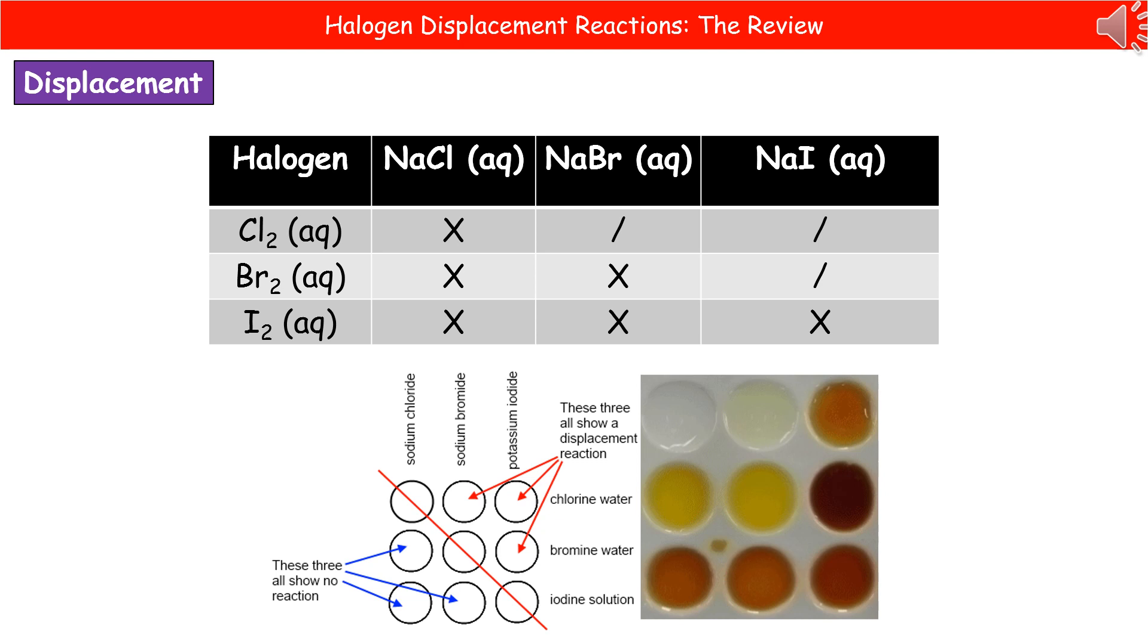What we're looking for in this is some kind of a change in colour that tells us we've seen a displacement reaction. Now, what they could ask you to do on the exam is to predict what you'd see. And all we need to do there is apply our knowledge that the more reactive halogen will take the place of the less reactive one.